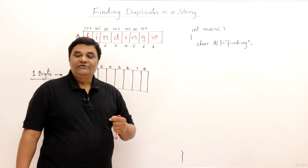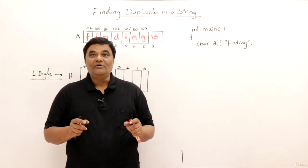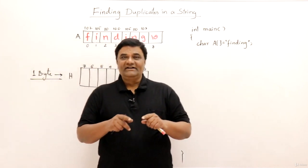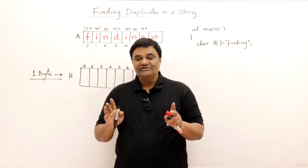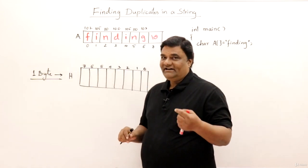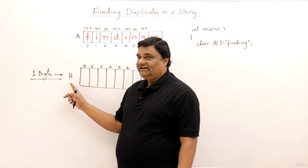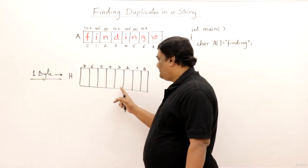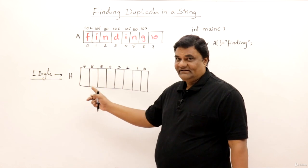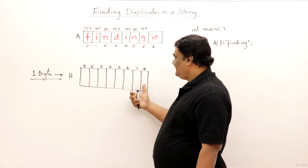For understanding bitwise operations we should know how data is stored in memory in the form of bits. I have taken just one byte - it is sufficient to understand using one byte. Suppose I have a variable taking only one byte, let us say a character type variable. I am calling that variable H, and it is taking one byte. One byte is eight bits.